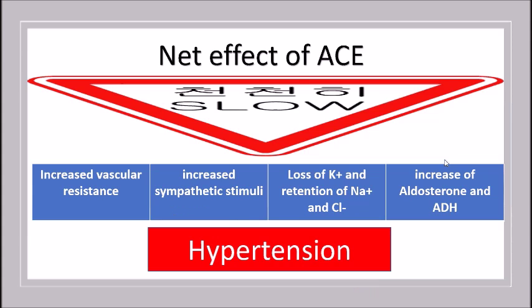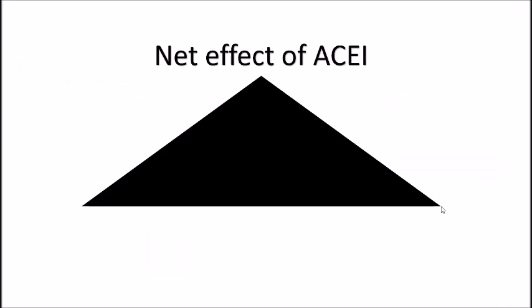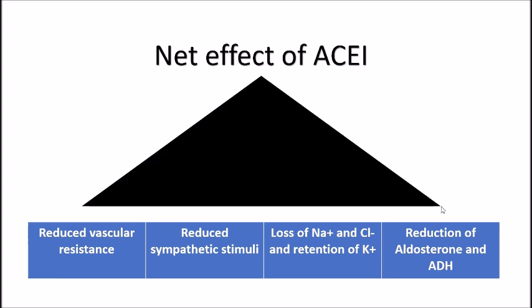The net effect of angiotensin 2 is to increase vascular resistance, increase sympathetic stimulation, cause loss of potassium, and promote retention of sodium and chloride, along with elevated aldosterone and antidiuretic hormone. Combined, these effects produce increased blood pressure — hypertension. No one really knows what causes hypertension for sure, so blocking ACE is a very appropriate target. By blocking ACE, you dilate arterioles, decrease sympathetic activity, and retain potassium while losing sodium and chloride, resulting in reduced blood pressure.